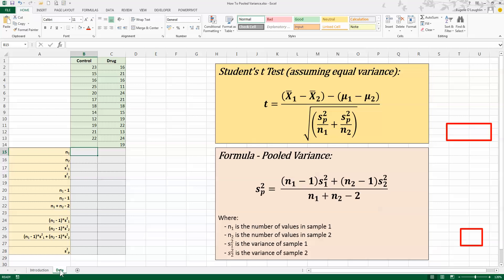Now to see if there's a significant difference between the means of the control group and the drug group we would run a student t-test. Now let's assume that variance is equal for these two samples. The t-test formula we would use is the one in the brown box on the top of the right hand side of your screen here.